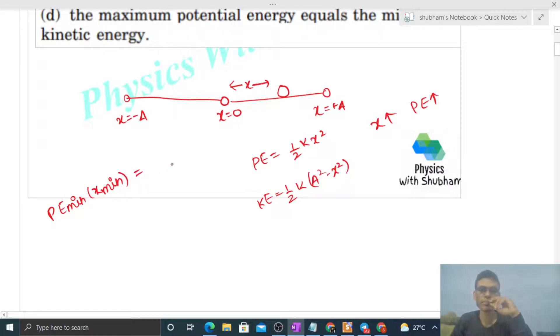So potential energy minimum will be? At x equals zero, you can check it, zero. If I put the value of x as zero in this equation, then it will be zero.